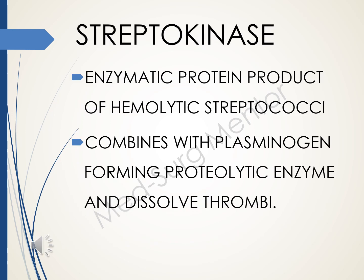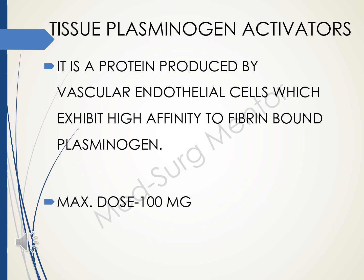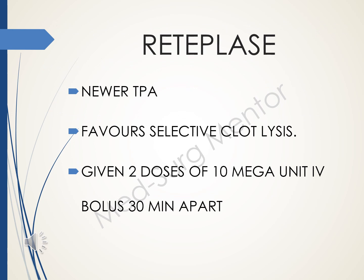Streptokinase is an enzymatic protein product of hemolytic streptococci. When it combines with plasminogen, it forms a proteolytic enzyme called plasmin which dissolves thrombi. Tissue plasminogen activators are proteins produced by vascular endothelial cells with high affinity to fibrin-bound plasminogen; the maximum dosage is 100 milligrams. Reteplase is a newer tissue plasminogen activator that favors selective clot lysis and is given in two doses of 10 mega units IV bolus, 30 minutes apart.